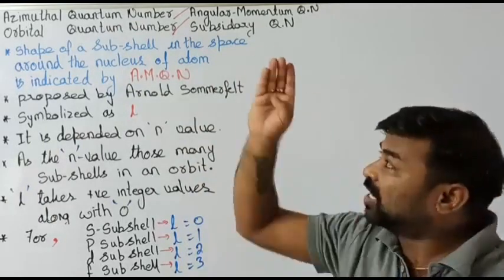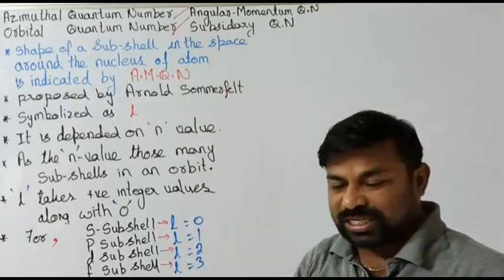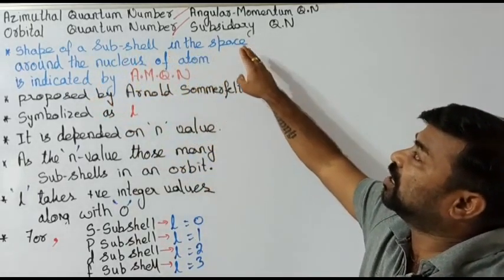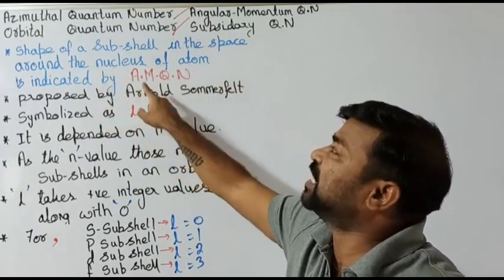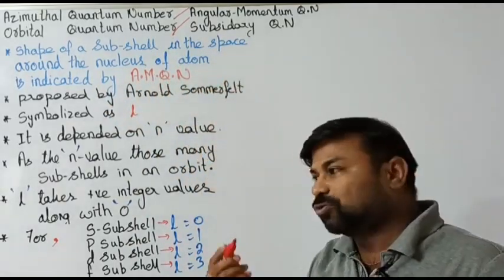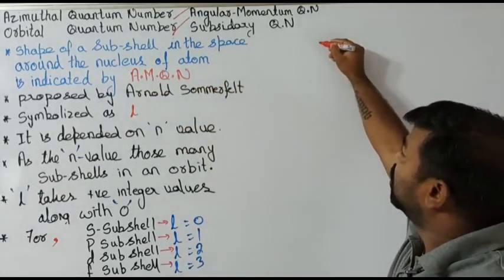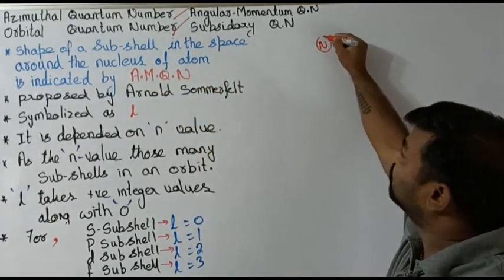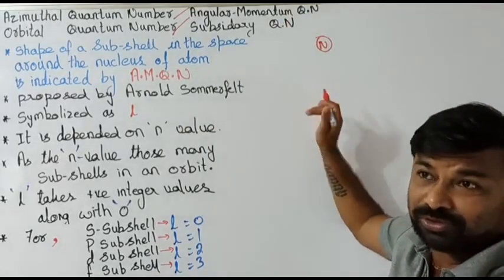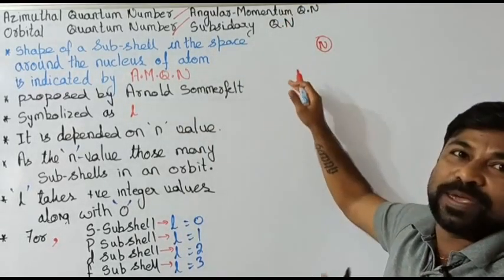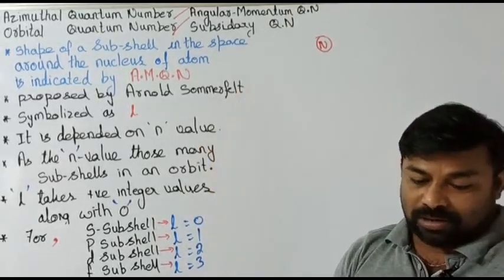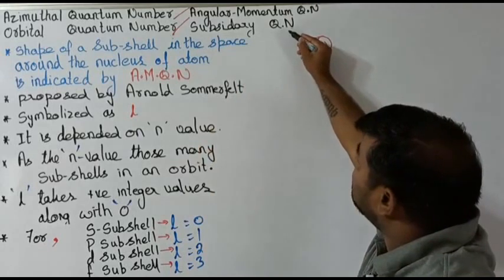The shape of a subshell in the space around the nucleus of an atom is indicated by the angular momentum quantum number. If you take the nucleus, the space around it contains subshells. Now the first orbit, second orbit, third orbit and so on — what is the shape of those subshells in that space around the nucleus?